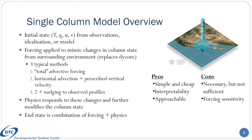For those unfamiliar with single-column models in general, here's a quick overview of how one works. The initial state of the column comes from either observations, an idealization, or some higher-dimensional model. Rather than a dynamical core advecting properties throughout the domain, forcing is specified to mimic how the column's state is changed by a surrounding atmosphere.